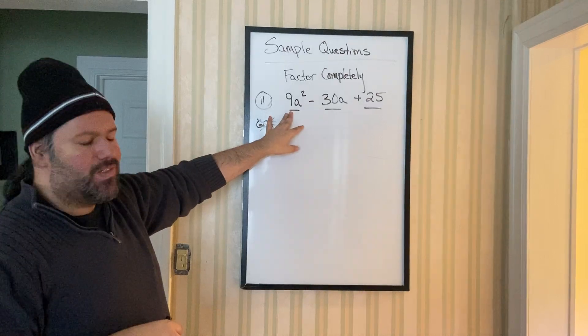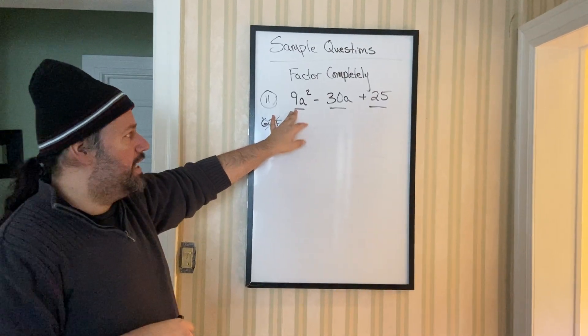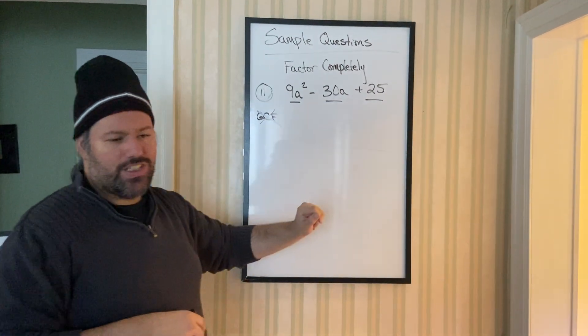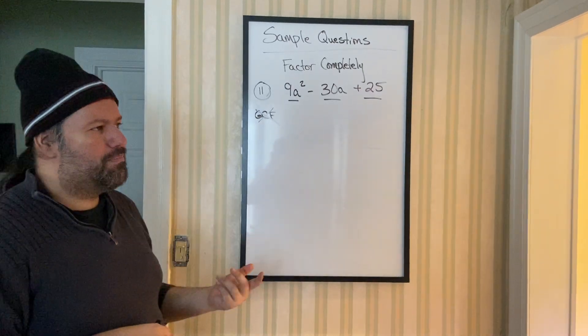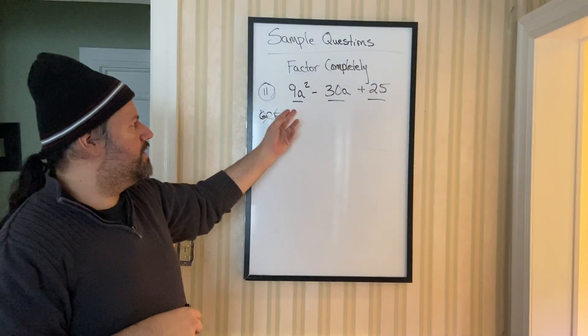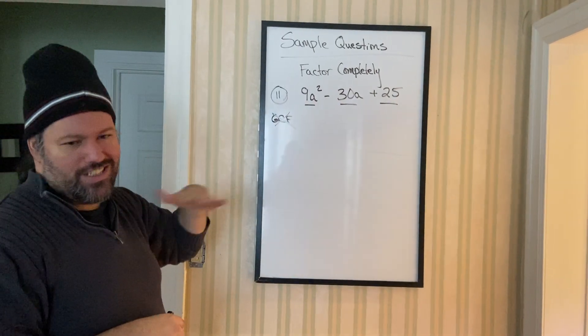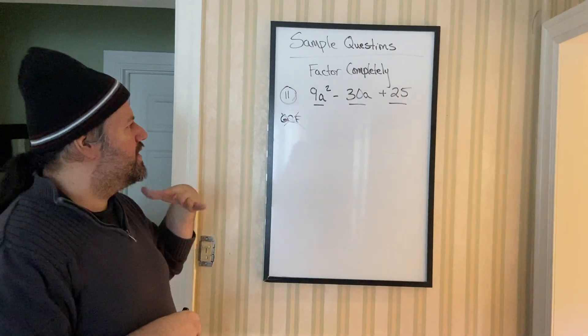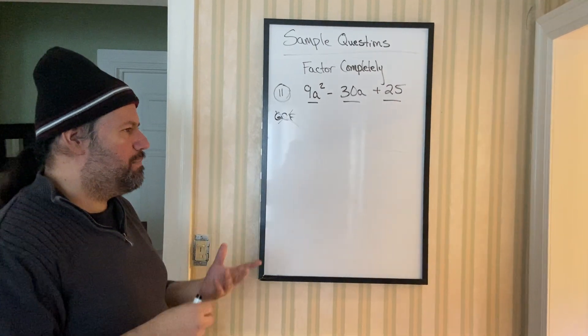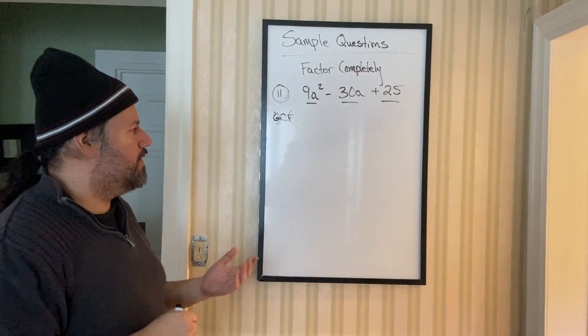The square root of this, which is 3A, the square root of this, which is 5, times it by 2. So 2 times 3A times 5, that gives you 30A. I think that's just totally confusing. So I don't do this as the perfect square trinomial.